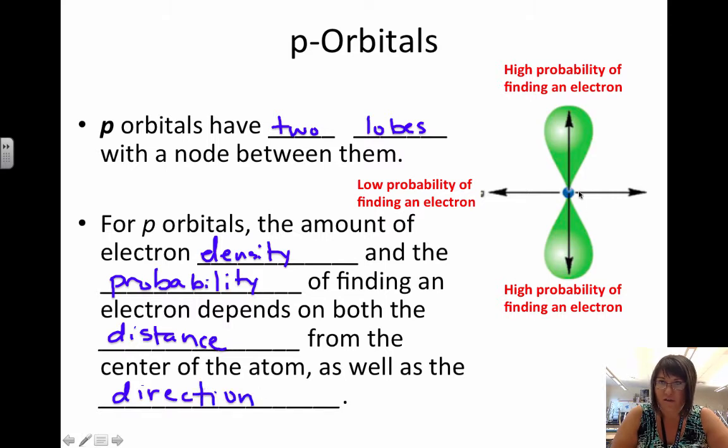So in this picture, if you're looking up or down, you're more likely to find an electron than if you're looking from side to side or front and back.